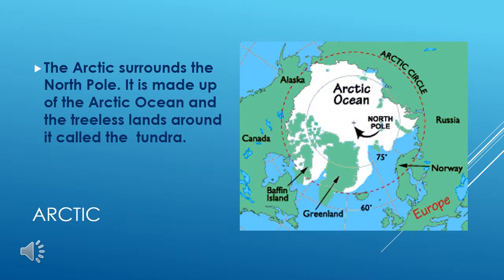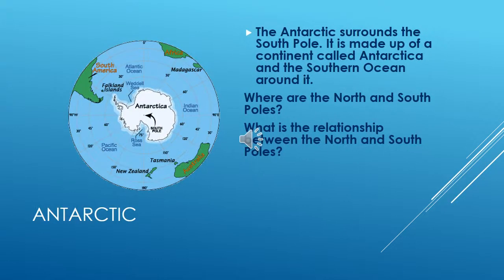Arctic. The Arctic surrounds the North Pole. It is made up of the Arctic Ocean and the treeless lands around it, a continent called the Tundra. Antarctica. The Antarctic surrounds the South Pole. It is made up of a continent called Antarctica and the Southern Ocean around it.